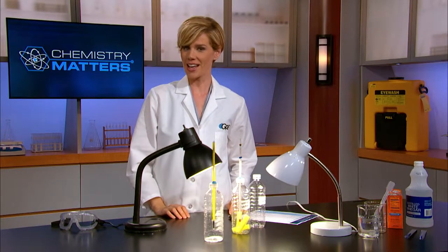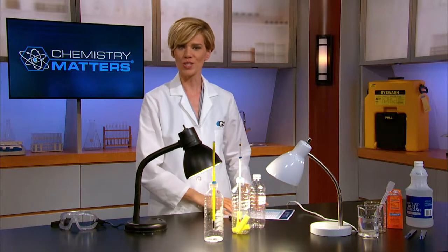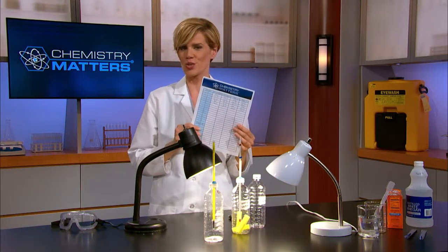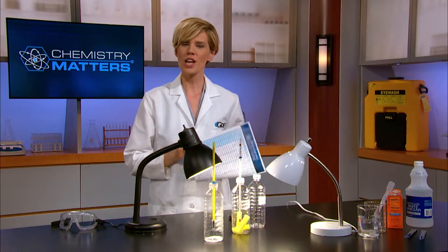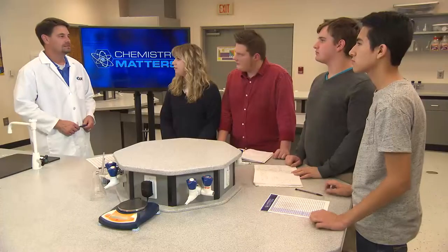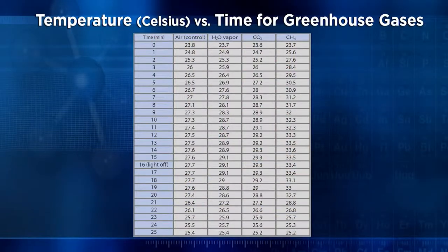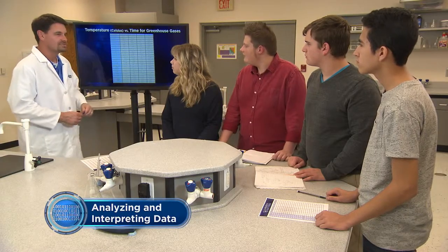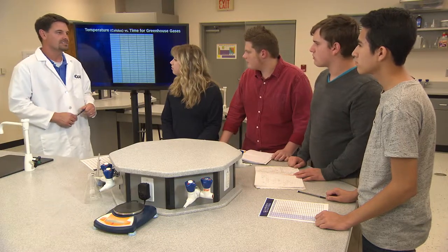By now you should have completed our greenhouse gases lab and recorded your results on the data sheet available in our Chemistry Matters toolkit. So let's head back out to our classroom so you can see if your data matches the data found by our students. Now that everyone has collected and recorded their data, let's look at it all together. I've combined your data sheets here and we've calculated the average temperatures for both teams. This spreadsheet shows the time in minutes as well as the temperature in degrees Celsius for the various gases. And while it's helpful, it's also a good example of data that would be better interpreted in a graph.